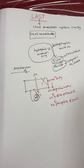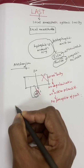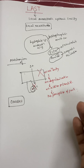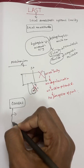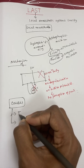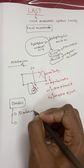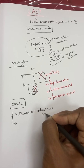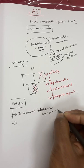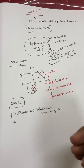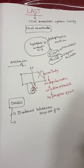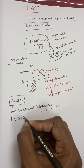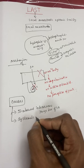Now we need to know the causes of LAST and the risk factors. The two main causes are: first, inadvertent intravenous injection of a large dose of local anesthetic, and second, inadvertent intra-arterial injection when performing peripheral nerve blocks, or excessive systemic absorption of the local anesthetic.